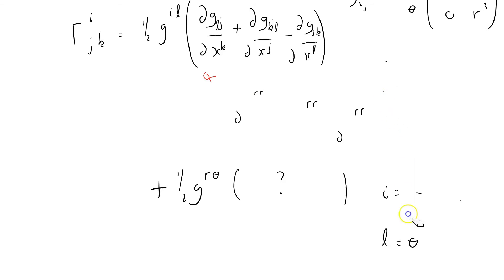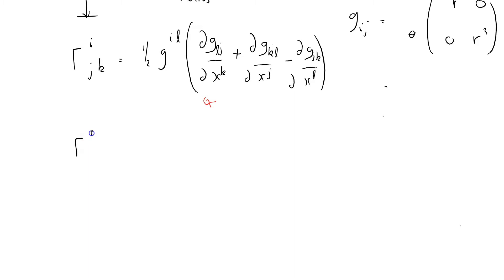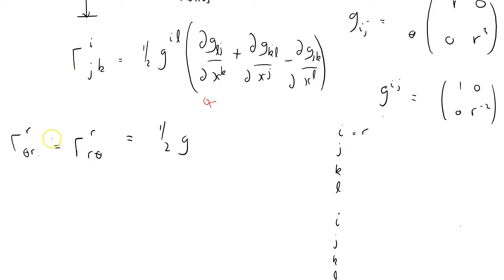Now I'll cycle through all the combinations. Next is Γ^r_rθ, which equals Γ^r_θr by symmetry in the lower two indices. This equals one-half g^il. The inverse metric tensor g^ij has components 1 and r^{-2} on the diagonal, zero off-diagonal, since it's the matrix inverse of the metric tensor.